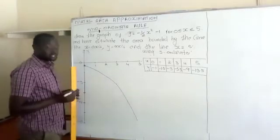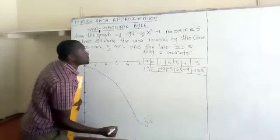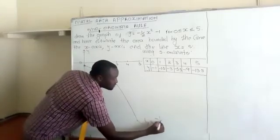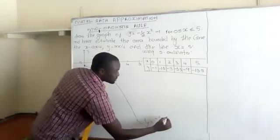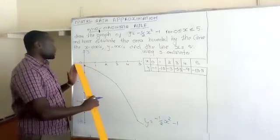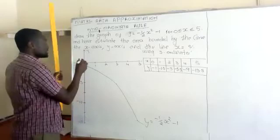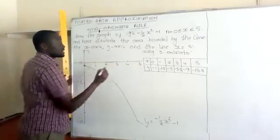So this is the graph of y equals negative 1 half x squared minus 1. And we need the area bounded by that curve, the x-axis, so this is the other boundary,